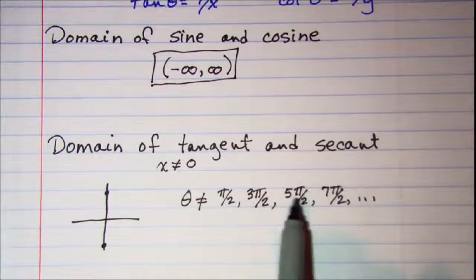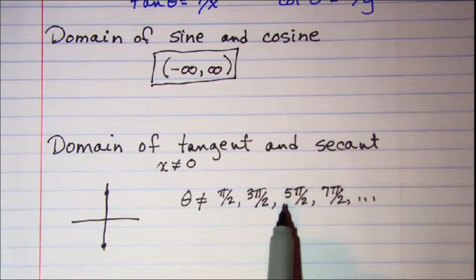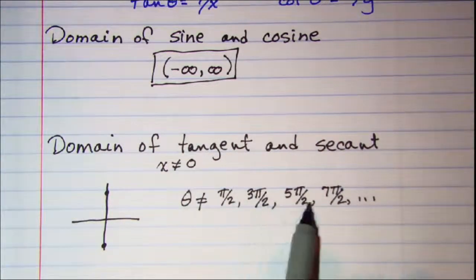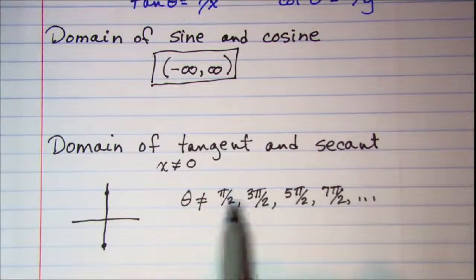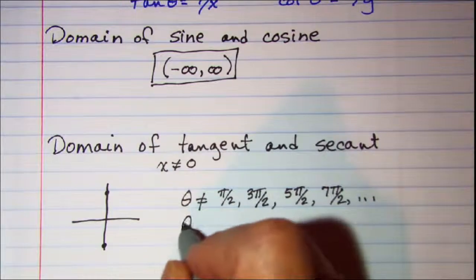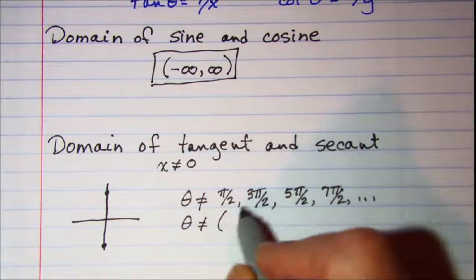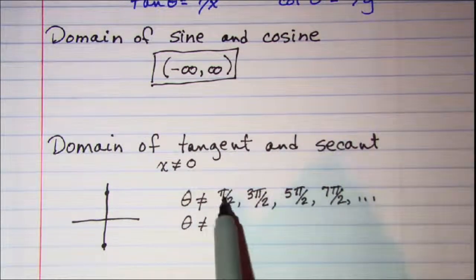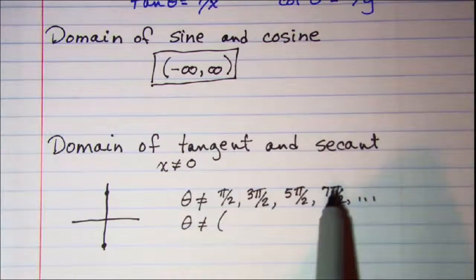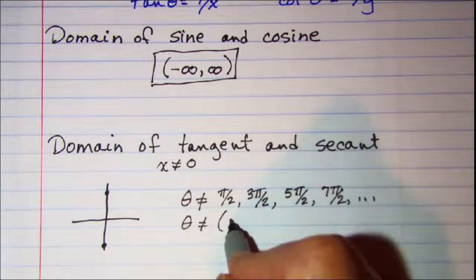Now if we're going to write our domain with an algebraic expression, notice that all of these have 2 in the denominator and pi in the numerator. So theta cannot equal... Let's look at the numbers that change: we have 1, 3, 5, 7—those are odd numbers.